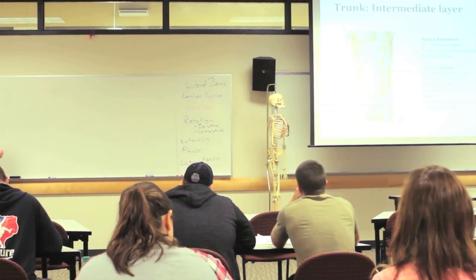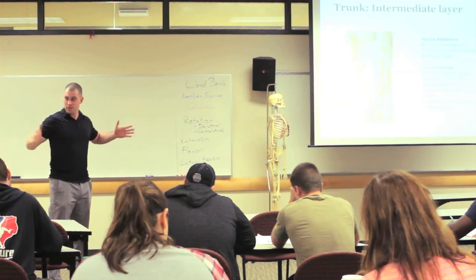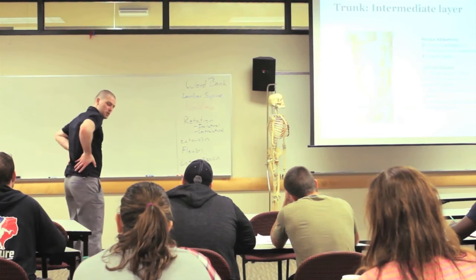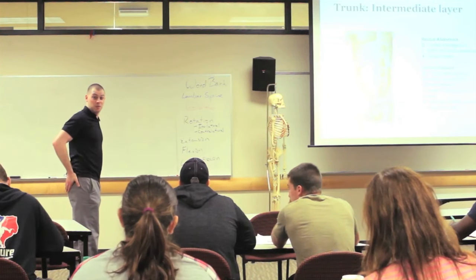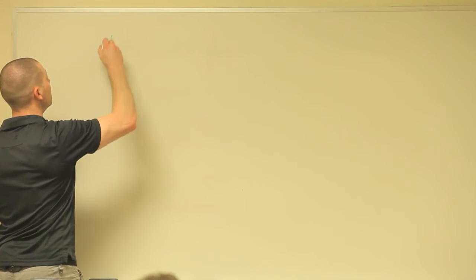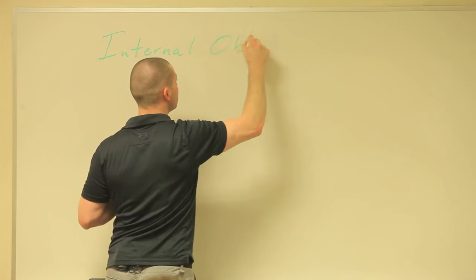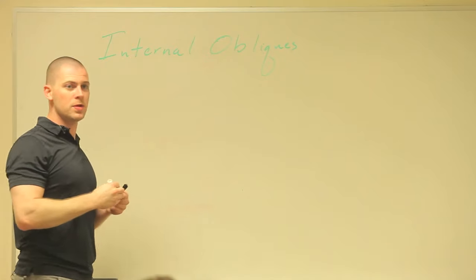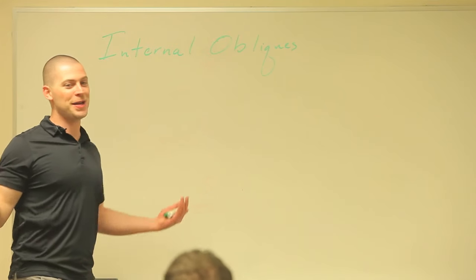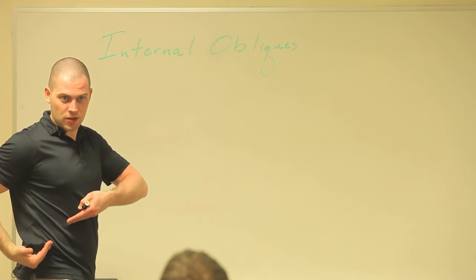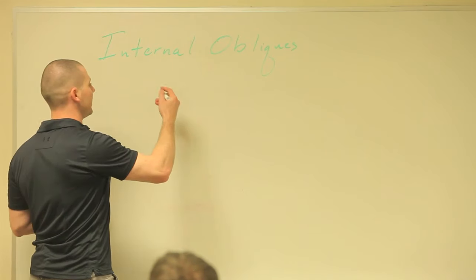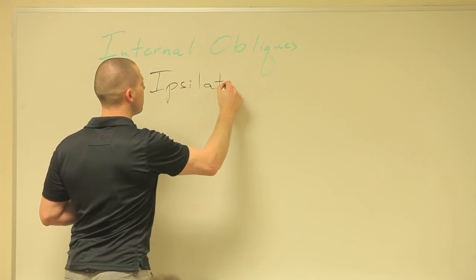Internal obliques. We talked about external obliques going this way — those are the muscles you can see, fiber direction as if you put your hands in your front pockets. Guess which way the internal obliques go? This way — it's like the direction your fingers would be if you put your hands in your back pockets. So which joint actions are we looking at? Rotation — we got the obliquity, we know it's on a diagonal, so it's probably going to contribute to rotation. But you have to tell me: ipsilateral or contralateral? If it's going this way and it shortens — ipsilateral.